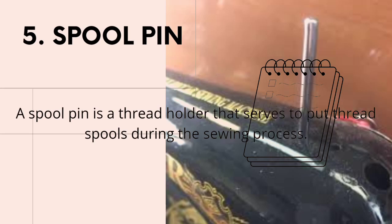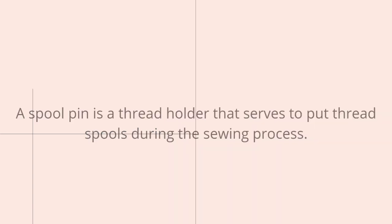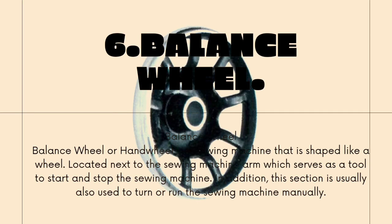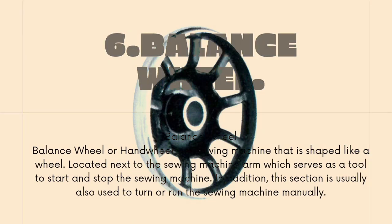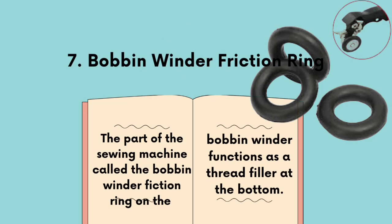Fifth, the spool-pin. A spool-pin is a thread holder that serves to put thread spools during the sewing process. Sixth, the balance wheel. The balance wheel or hand wheel is a part shaped like a wheel, located next to the sewing machine arm, which serves as a tool to start and stop the sewing machine. It is also used to turn or run the sewing machine manually. Seventh, the bobbin-winder fraction ring. This part functions as a thread filler at the bottom.